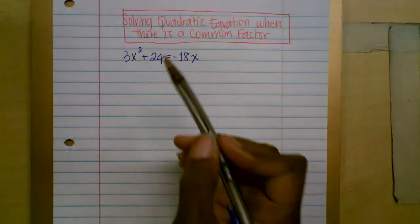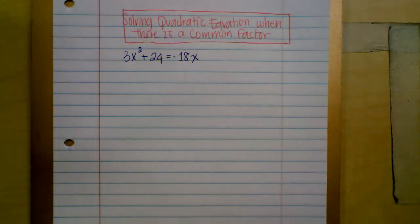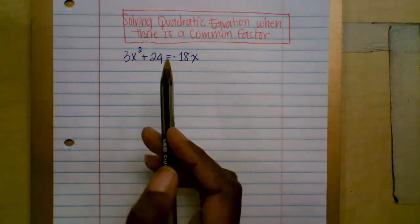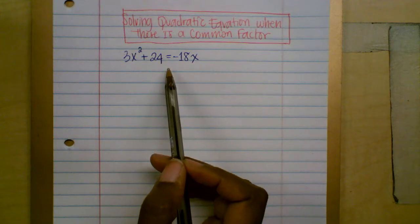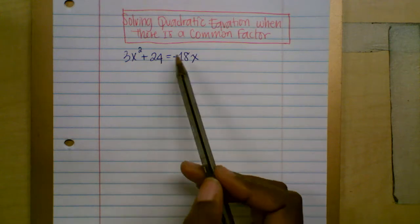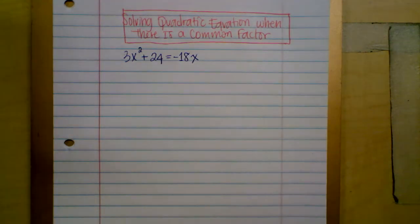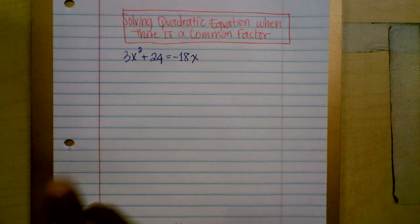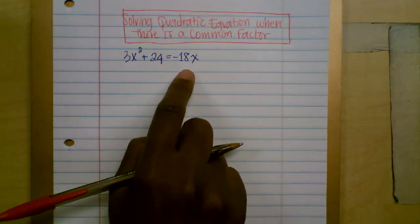So I gave you this quadratic equation. Remember, the first step is to rewrite the quadratic equation in standard form. The right side needs to be equal to zero. So what do we need to do here in order to have the right side equal to zero?